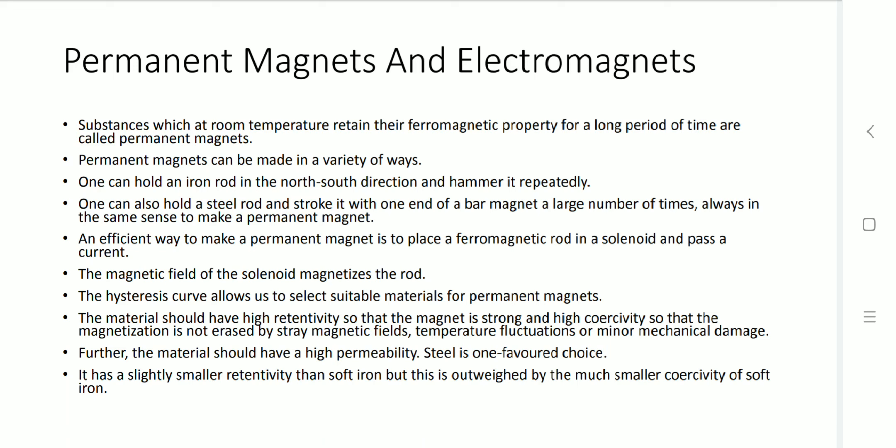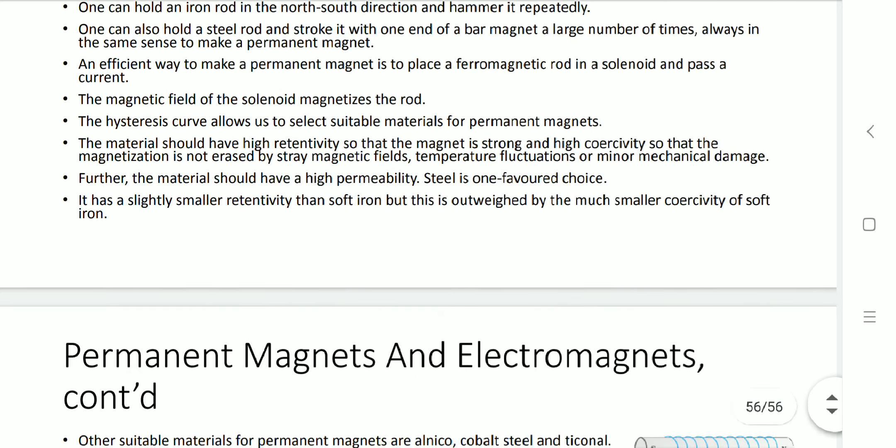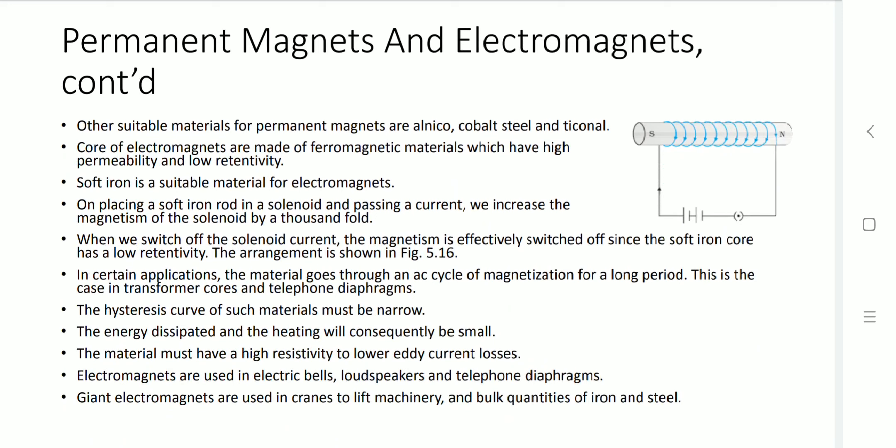The material should have high retentivity so the magnet is strong, and high coercivity so that magnetization cannot be erased by stray magnetic fields, temperature fluctuations, or mechanical damage. The material should also have high permeability. Steel is preferred for this purpose. Steel has a slightly lower retentivity than soft iron, but comparing its coercivity, we generally use steel instead of soft iron. Other materials used to design permanent magnets include alnico, cobalt steel, and ticonal.